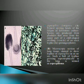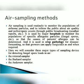Air sampling is used routinely to monitor the populations of airborne particles and to inform the public about air quality in pollen and spore counts through public broadcasting and weather reports. It is used by major hospitals to monitor the populations of specific allergenic particles and fungal spores so that the causes of patients' allergies can be determined. It is also used in crop pathology for disease forecasting so that growers can apply fungicides as and when required.